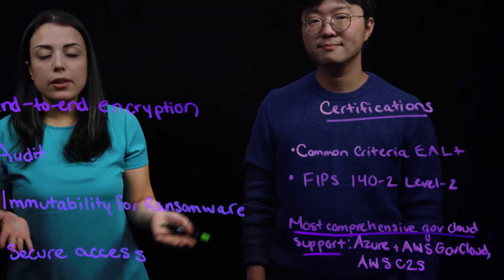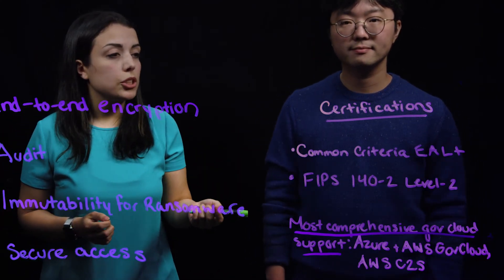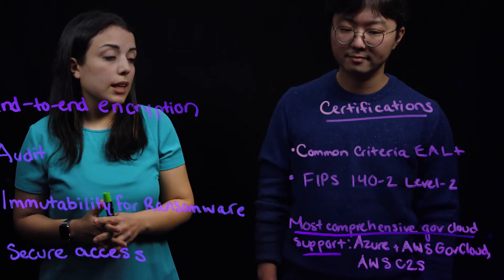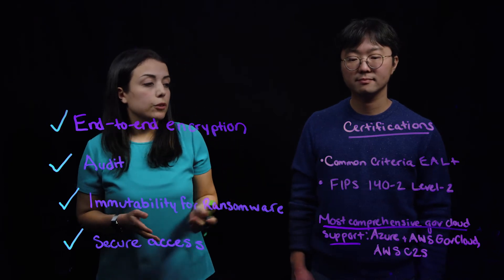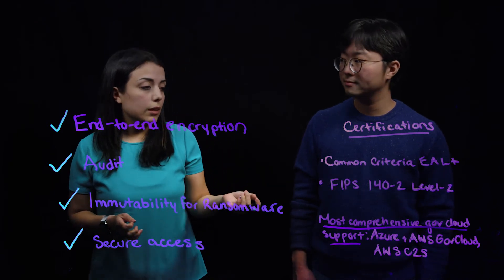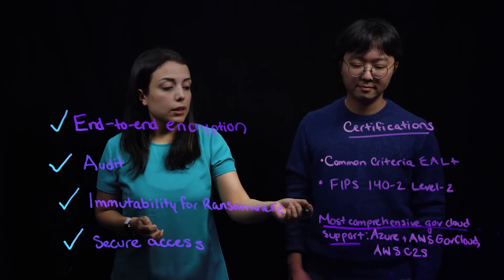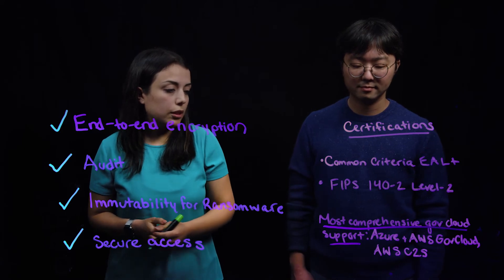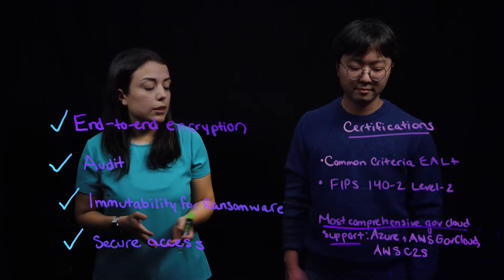On top of everything that I mentioned here, there is also the certification part. Rubrik has built the industry's most comprehensive portfolio of certifications and accreditations. You can see common criteria, FIPS 140-2 Level 2 for self-encrypting drives, and also support for government cloud infrastructure, like Microsoft Azure GovCloud, AWS GovCloud, or C2S.